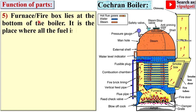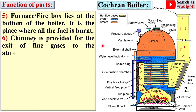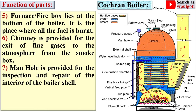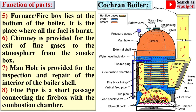The furnace, or firebox, lies at the bottom of the boiler — it is the place where all the fuel is burned. A chimney is provided for the exit of flue gases to the atmosphere from the smoke box. A manhole is provided for inspection and repair of the interior of the boiler shell. The flue pipe is a short passage connecting the firebox with the combustion chamber.